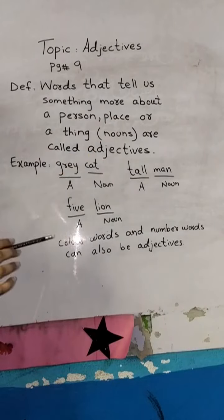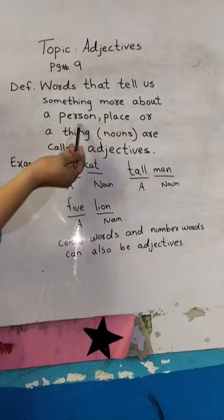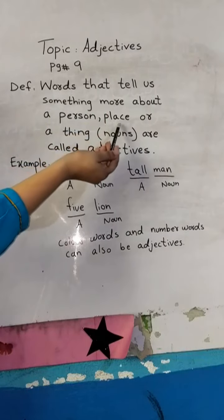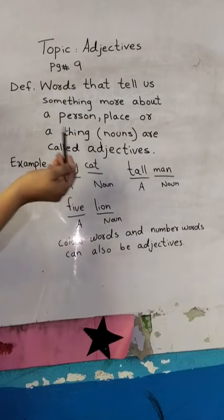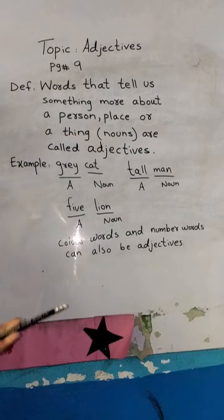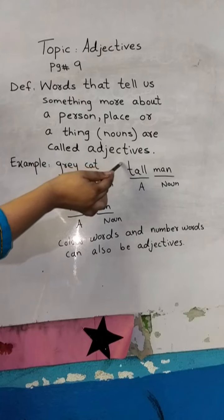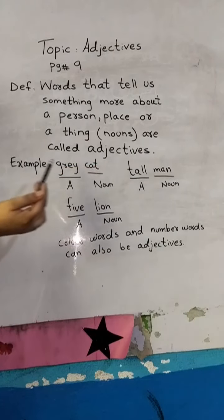Adjectives are words which we use to explain more about a person, place, or things. That are called adjectives. For example: